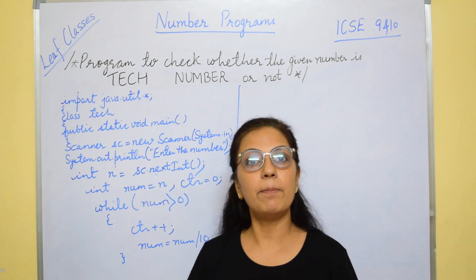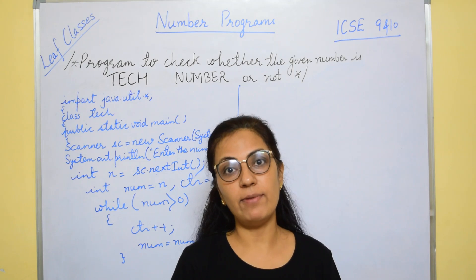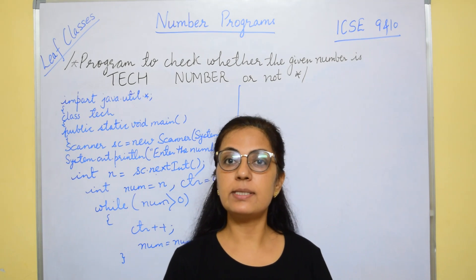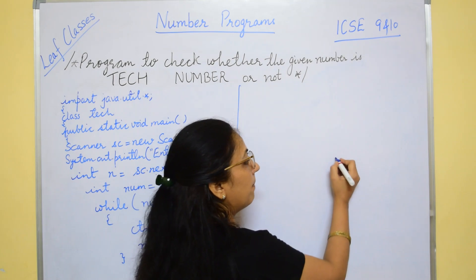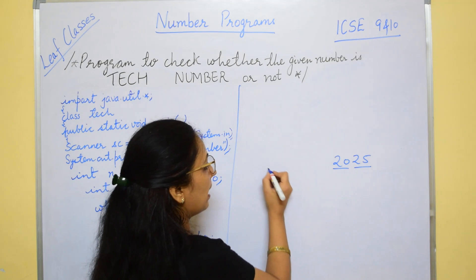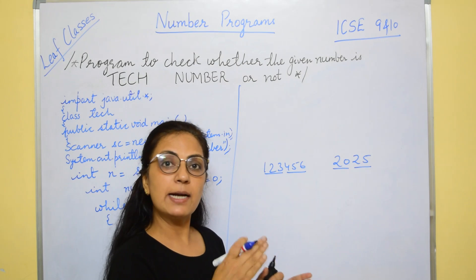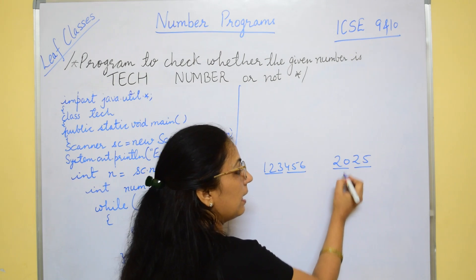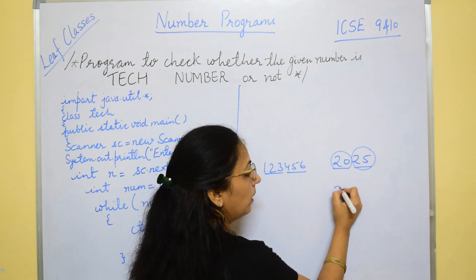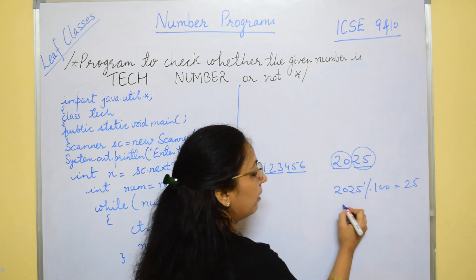Now we have the total number of digits in the CTR variable. If that is an even value, we have to divide the number into two equal parts. For example, for 2025, we want 20 and 25. For a 6-digit number like 123456, we want two 3-digit parts. We use: number modulus 100 gives 25, and number divided by 100 gives 20. For a 6-digit number, modulus 1000 gives 456, and divided by 1000 gives 123.